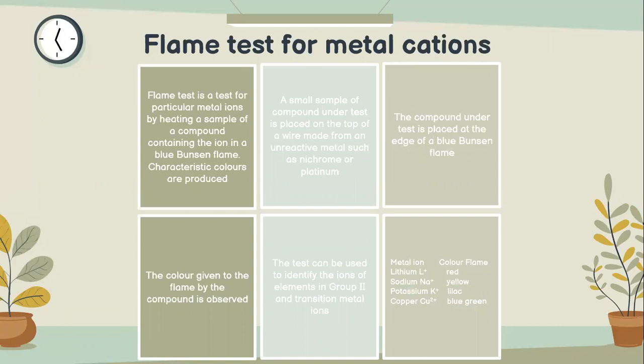The flame test can be used to identify the ions of elements in group 2 and transition metal ions. Metal ion flame colors: lithium Li+ gives a red flame, sodium Na+ gives a yellow flame, potassium K+ gives a lilac flame, and copper Cu2+ gives a blue-green flame.